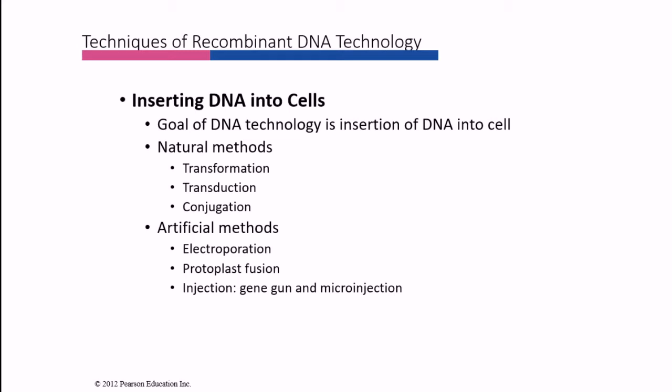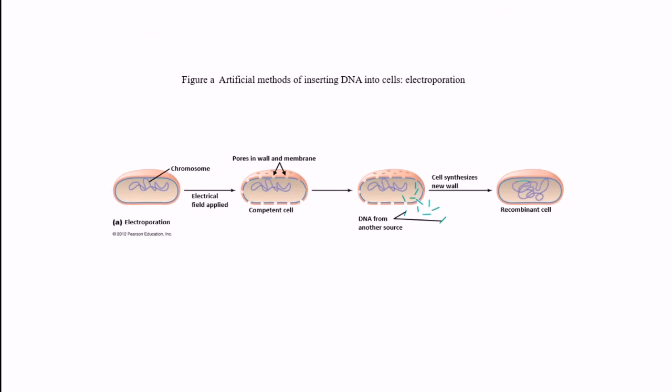In electroporation, you can see the plant cell with the chromosome. An electric field is applied, and as the term suggests, a pore is created on the cell wall. When the pore is created, the recombinant DNA present in the solution gets transferred through the pore inside the plant stem.